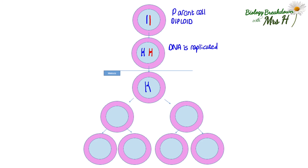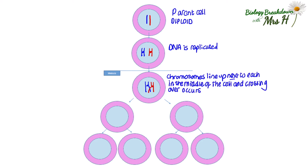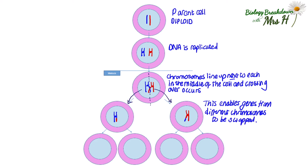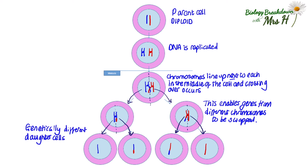The next bit is different from mitosis. Here the chromosomes pair up in the middle of the cell and something called crossing over occurs. This crossing over enables genes from different chromosomes to be swapped. As the chromosomes are pulled apart in the first division, bits of the chromosomes break off and swap over. Then as the cell divides again, you now have four genetically different daughter cells, each with half the amount of DNA as there was in the parent cell. We would call these cells haploid.